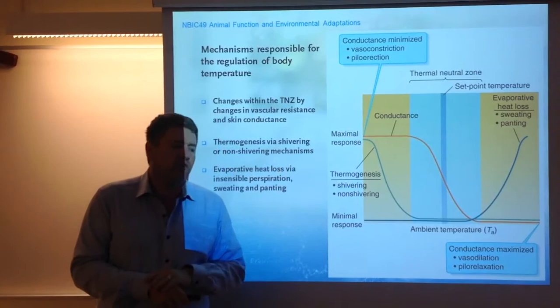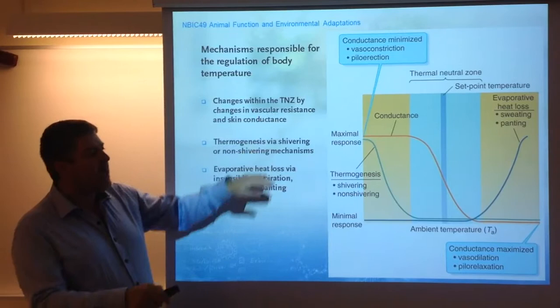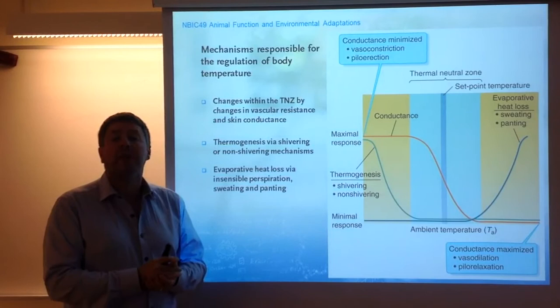So looking at this graph again: within the thermoneutral zone, changes in vascular resistance. Above the upper critical temperature, evaporative heat loss — sweating and panting are the classical mechanisms, and we will discuss these a little later. And at temperatures below, you have thermogenesis, either shivering or non-shivering thermogenesis. Within the thermoneutral zone, costs are relatively minor because changes in vascular resistance are sufficient. Above or below, you have increased costs, which is why metabolism increases outside this zone.